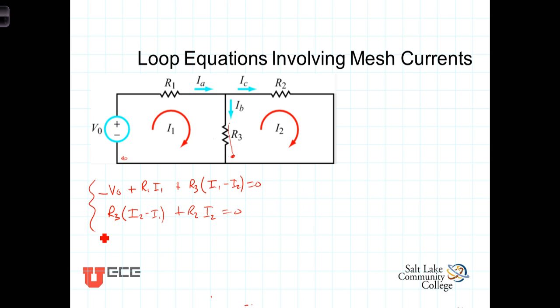We have two equations with two unknowns. We've got everything we need to solve. So the next step would then simply be to combine like terms. The first equation, let's factor or combine the I1 terms and factor I1 out. Doing so, we're left with an R1 plus an R3. Similarly for I2, there's only one I2 term. It's got a negative R3 times that, so negative R3 there. Bringing this negative V0 to the other side as a positive, we have then the left hand side equaling V0.